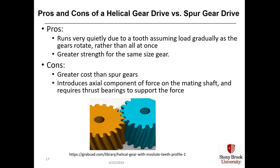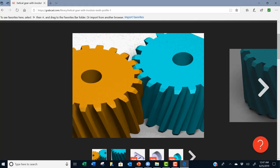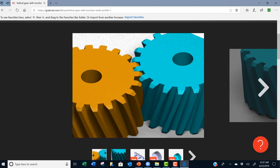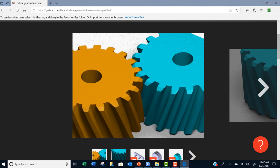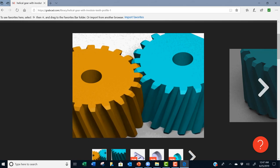On the plus side, helical gear drives run very quietly due to a tooth assuming load gradually as the gears rotate rather than all at once, and they have greater strength than spur gear teeth for the same size gear. On the negative side, they cost more than spur gears, and with helical gears you introduce an axial component of force on the mating shaft, requiring a thrust bearing to support that force. Here's a GIF file that shows how helical gears mesh — it's actually quite mesmerizing watching the gear teeth engage.